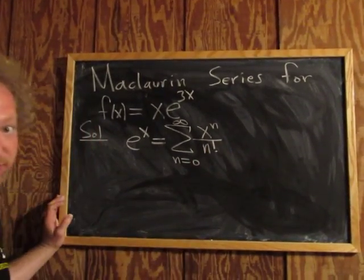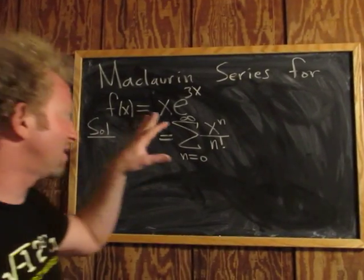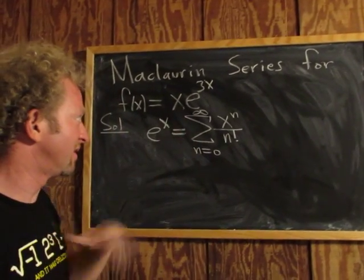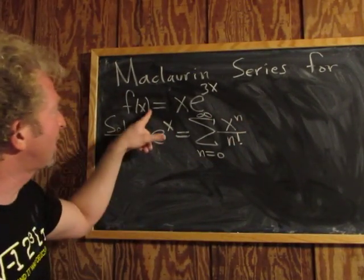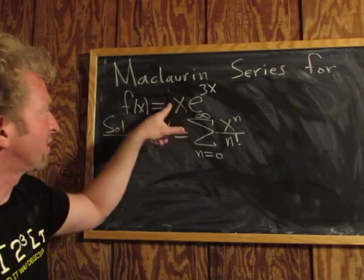This converges everywhere. So e to the x equals this infinite series. This is the infinite series representation of e to the x. We have to find the same series for this function here.